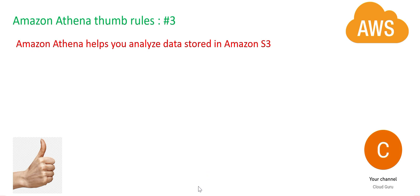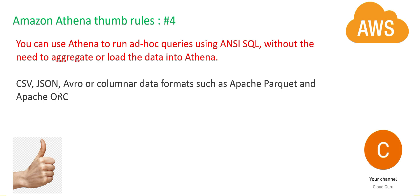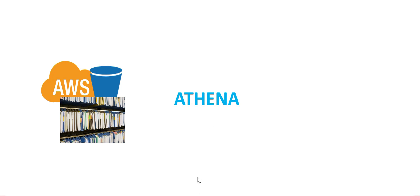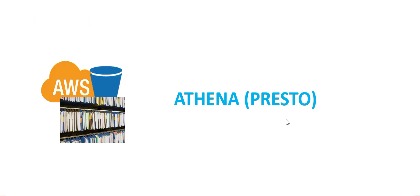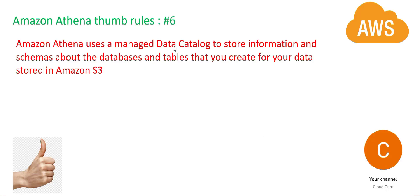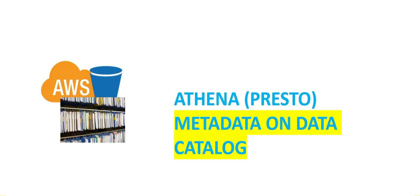Athena helps you analyze data stored on S3 — that is its prime, sole purpose. You might have a large number of files in formats like CSV, JSON, Avro, or columnar data formats like Apache Parquet or Apache ORC. Columnar data formats help you read more data while storing it in a smaller amount of space. Athena has no limits on format — it can read all sorts of formats. It uses Presto in the background to fire SQL queries on these file formats, and it uses a data catalog to store metadata — schemas and field information — about your tables and files.